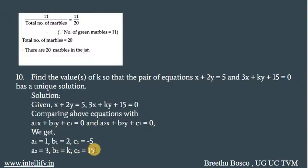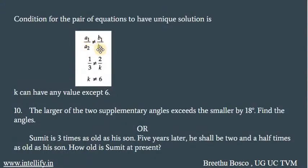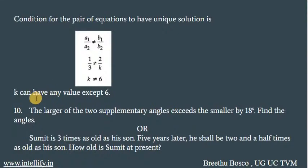For unique solutions, A1/A2 should not be equal to B1/B2. A1 = 1 and A2 = 3, so you get 1/3 ≠ 2/K, which means K should not be equal to 6. So K can take any value except 6. The concept to remember: for a pair of equations to have unique solutions, A1/A2 should not be equal to B1/B2.